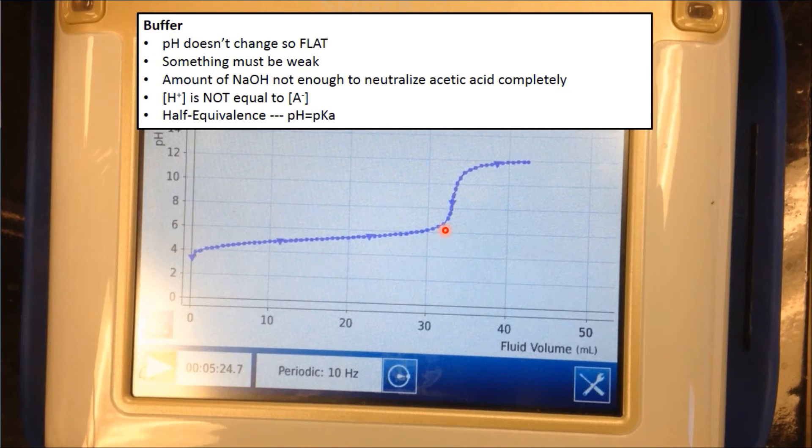The buffer region also has the half equivalence point, which in our case would be around here somewhere. This region is where the pH equals the pKa. The pKa tells you how strong the acid is. It tells you how much the acid dissociates. And the lower the pKa, the stronger the acid.